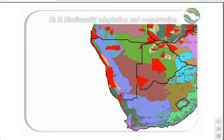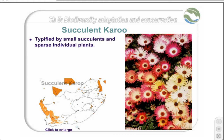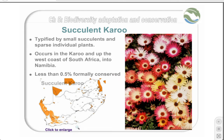This map shows the major ecoregions of Southern Africa. The two biodiversity hotspots we will be looking at are the Cape Floristic region, shown in the southwest of the country, and the succulent Karoo, shown in green and extending up to the border with Namibia. This map shows the location of the succulent Karoo biome. As can be seen, a very limited portion of this biome is conserved, despite the fact that it has both high species diversity and a very high level of endemism. It is typified by small succulents and sparse individual plants, and occurs in the Karoo and up the west coast of South Africa into Namibia. Most importantly, less than 0.5% of it is formally conserved.